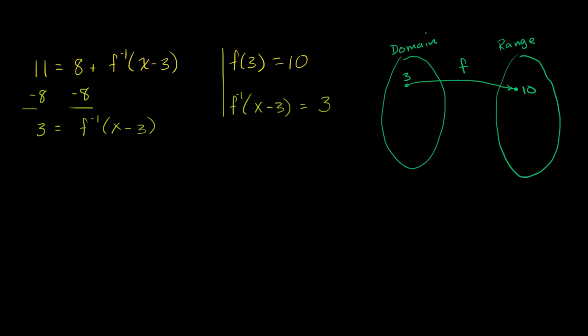But if the function does that, then the inverse function would map from 10 in the range to 3 in the domain. So this would be f inverse. So f inverse of 10 is equal to 3.